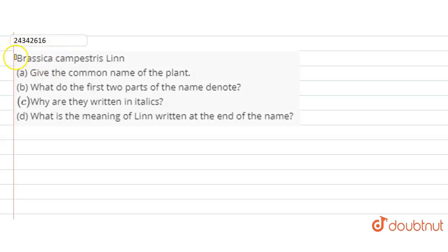The first part we are asking is the common name of the plant. So guys, the common name of Brassica campestris Lin is Mustard.